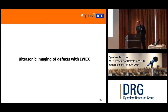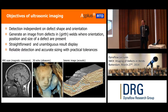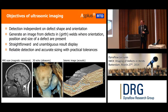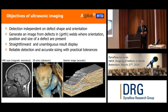That brings me to ultrasonic imaging of defects, having presented the limitations of current technologies. This is basically our objective: we would like a detection methodology that is not dependent on defect shape or orientation. We would like to generate an image from a defect in a girth weld or another structure, where the orientation, position, and size of the defect are captured in that image. It's much like the medical field — MRI scans that are really accurate and nice. So you start to wonder: why don't we have such advanced and accurate methodologies for non-destructive testing?